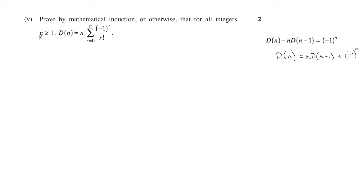But let's start with n equals 1. So we have to show that that's true first for n equals 1. So let's work out that. So r equals 0 to 1, negative 1 to the r on r factorial. 1 factorial is just 1.